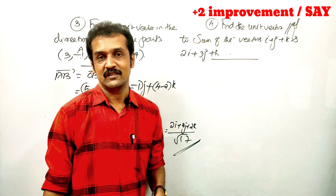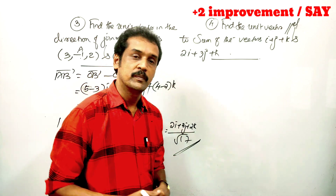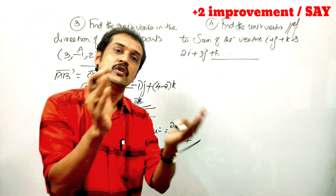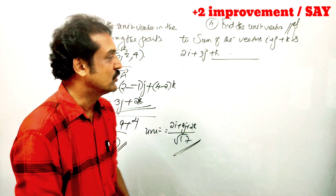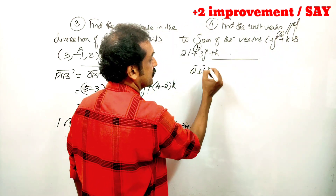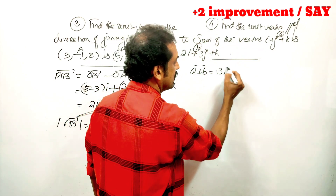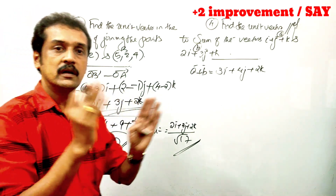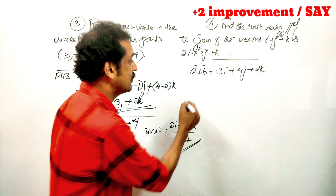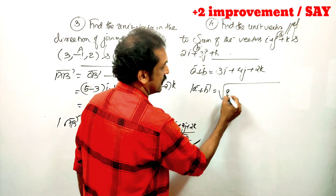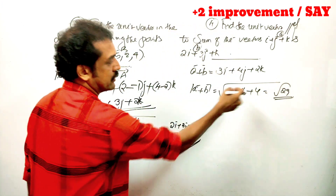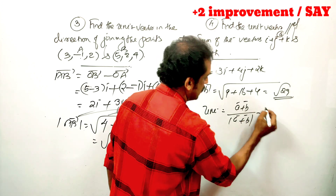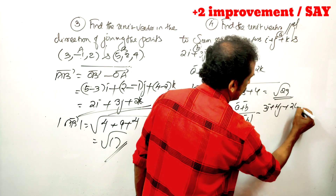Find the unit vector parallel to the sum of the vectors. Our unit vector is parallel to the sum of vectors A and B. We find the sum A plus B: 1i plus 2i = 3i, 1j plus 3j = 4j, 1k plus k = 2k. The modulus of A plus B equals root of 9 plus 16 plus 4, that is root of 29. Therefore the unit vector equals A plus B by modulus of A plus B, that is 3i plus 4j plus 2k by root of 29.